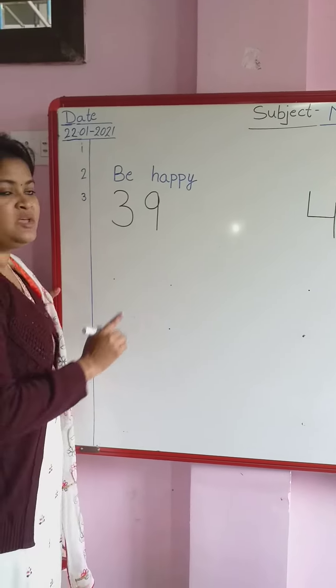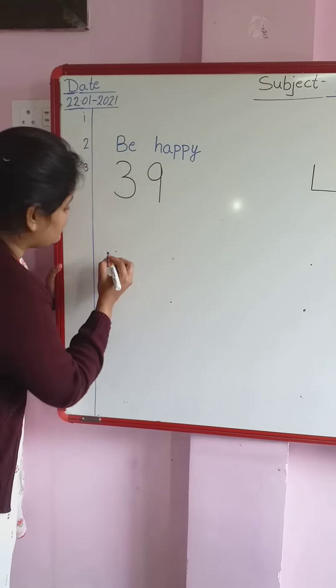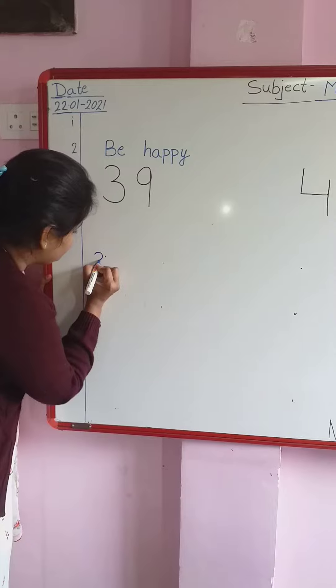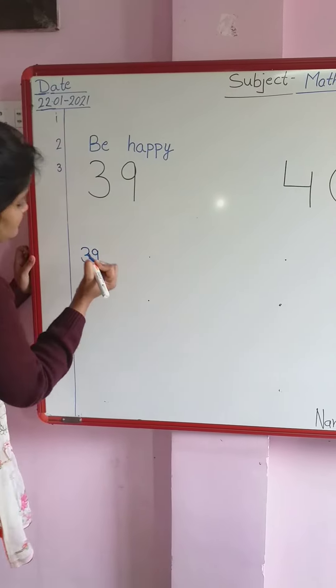In one box we have one number. Write here, 3 and 9. 39.